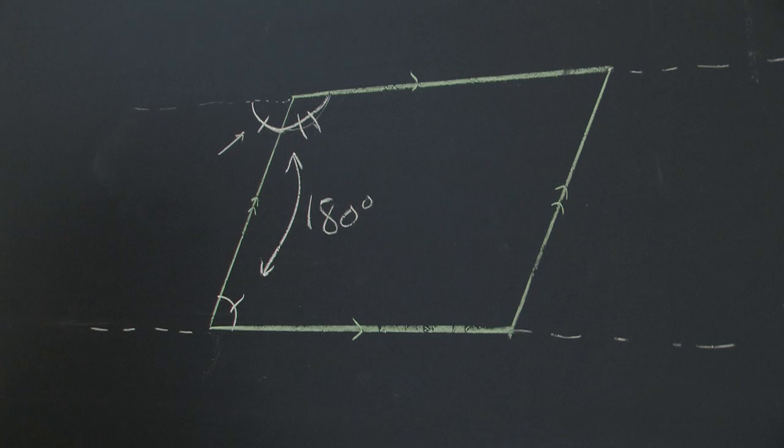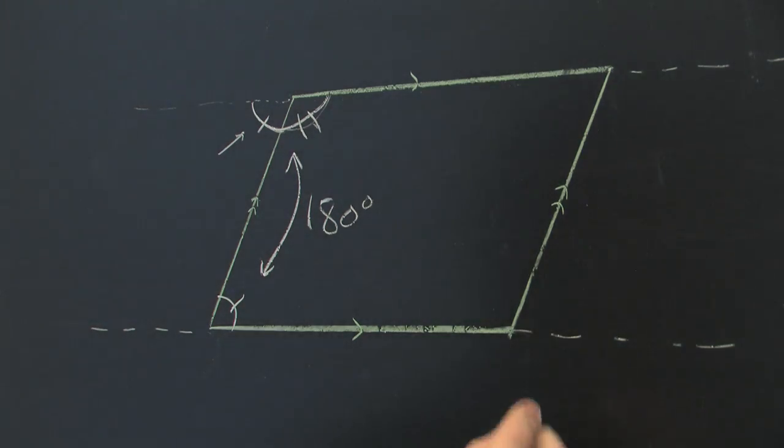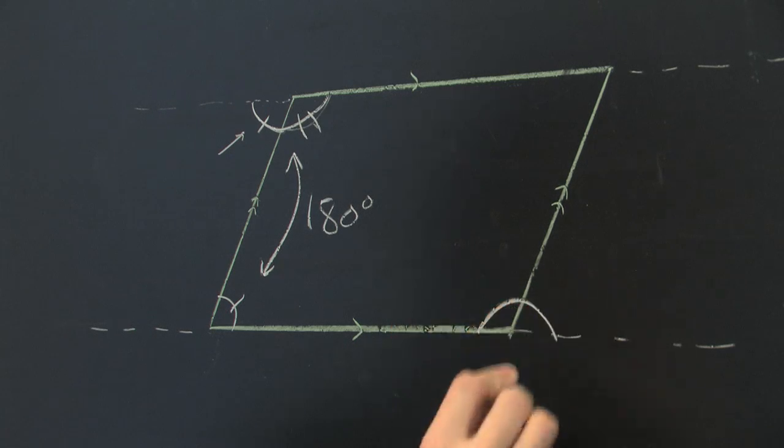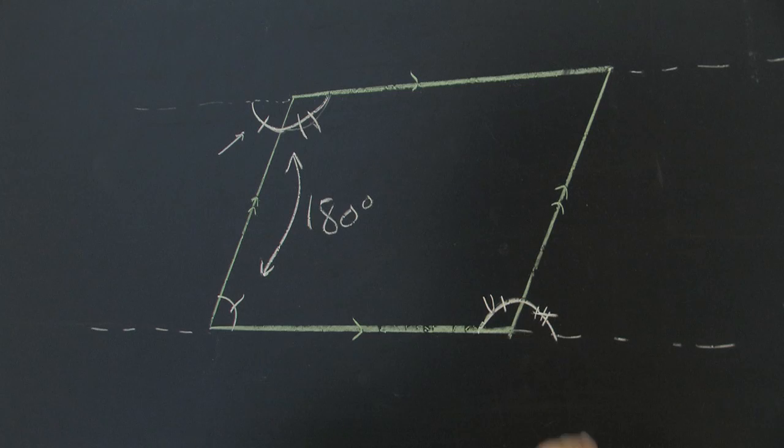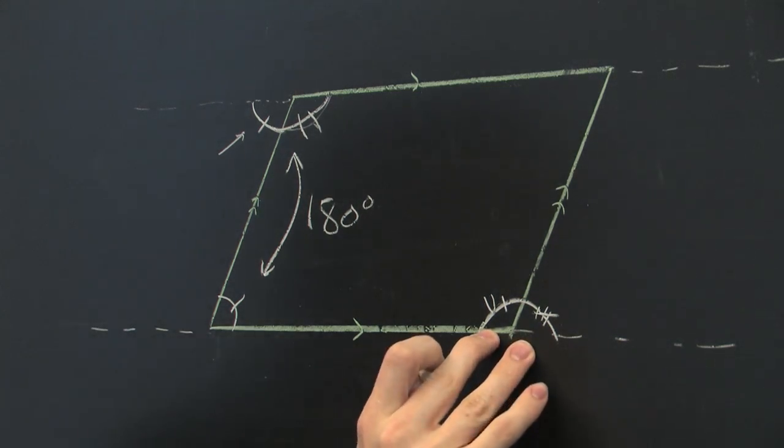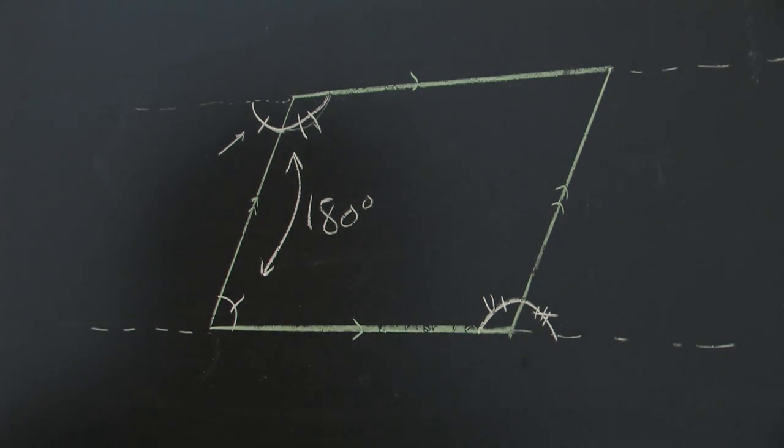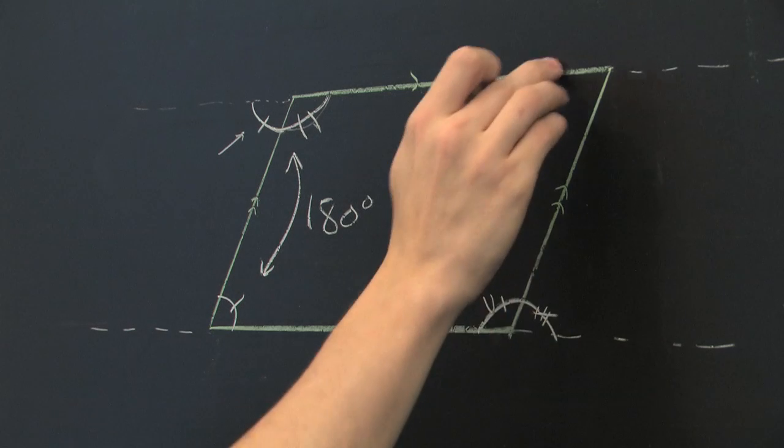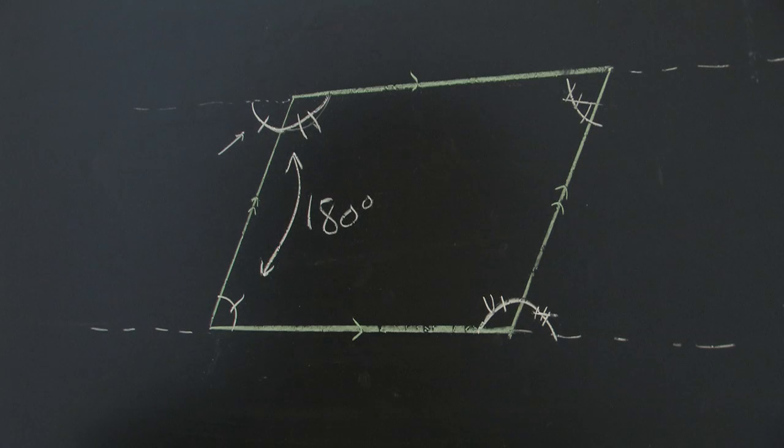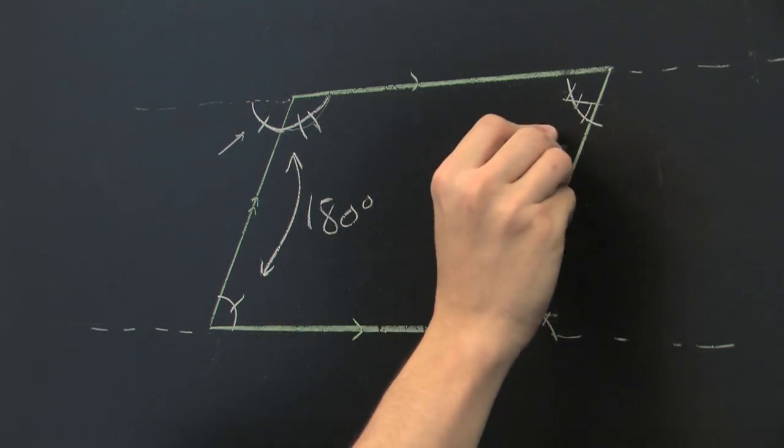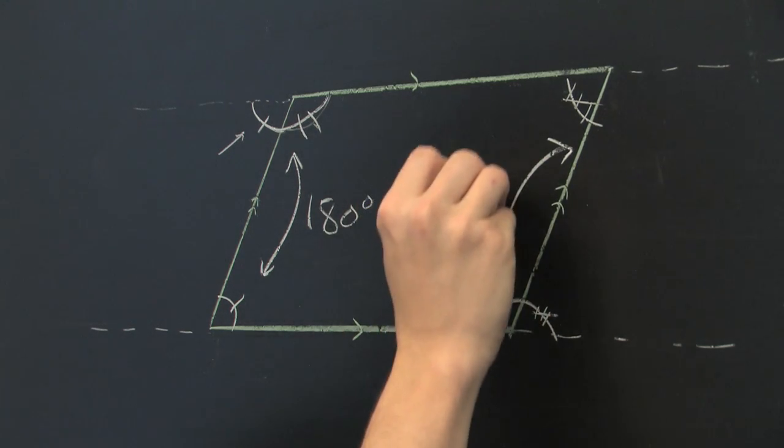Great. But of course, we can apply the exact same logic on the other side. These two angles together must add up to 180 degrees. Alternate interior angle theorem states that these two angles must be the same. And so it must also follow that these two angles must add up to 180 degrees.